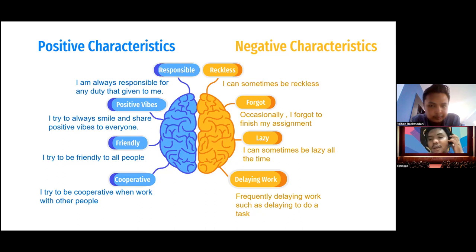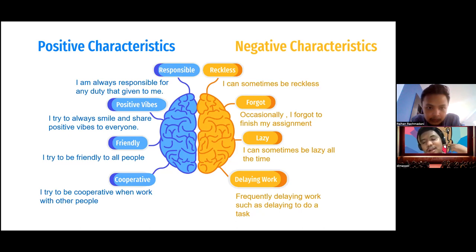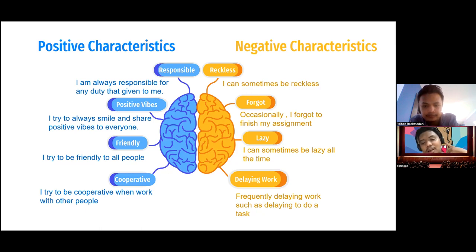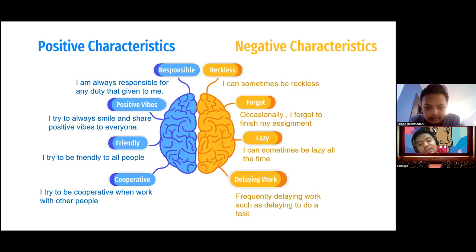Now for the negative characteristics, there are also four. The first is reckless — I can sometimes be reckless; for example, I forgot all my assignments and didn't complete them. The second is forgetful — occasionally I forget to finish my assignments. The third is lazy — I can sometimes be lazy. And the last is delaying work — I frequently delay doing tasks, which is related to being lazy, forgetful, and reckless.